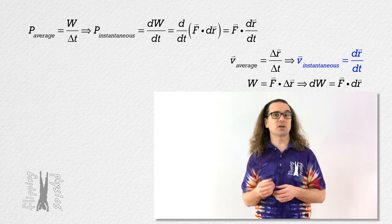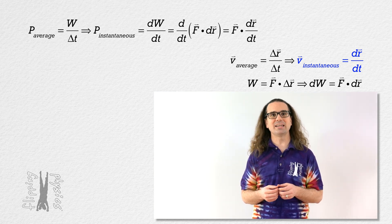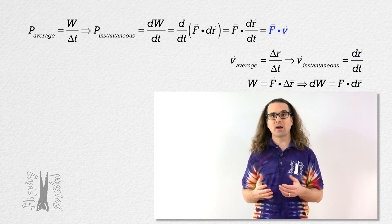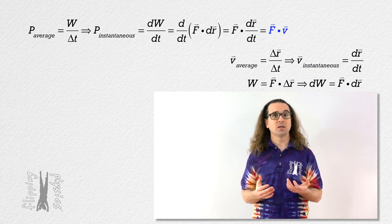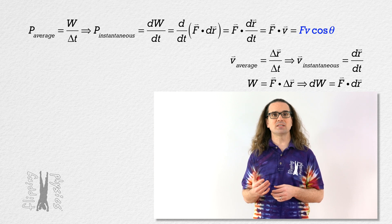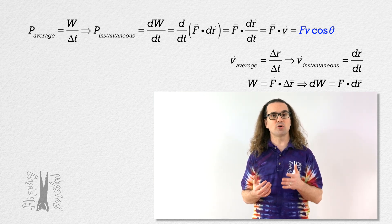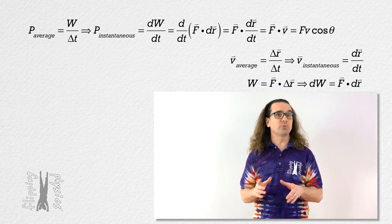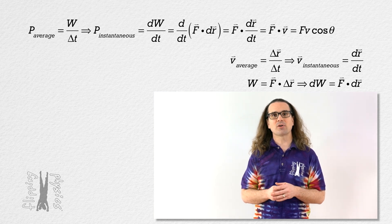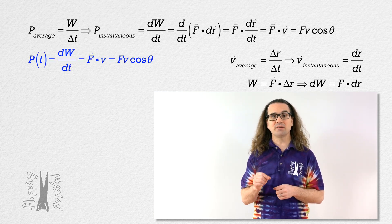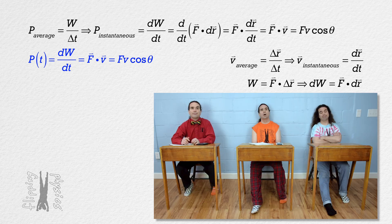Therefore, we now have another equivalent equation for instantaneous power. It equals the dot product of force and velocity, which also equals force times velocity times the cosine of the angle between those two vectors. And realize, because this is instantaneous power, it is also the power delivered to an object as a function of time.